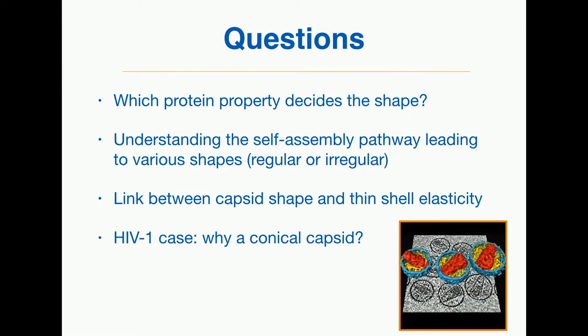The question I'm asking today is: can we identify what is the property at the level of a single protein that gives rise to a particular shape? How does a protein know whether it will end up in an icosahedral or an elongated structure? To do that, we try to understand the elasticity of these objects and make the link between elasticity and capsid shape, with some specific discussion about HIV.